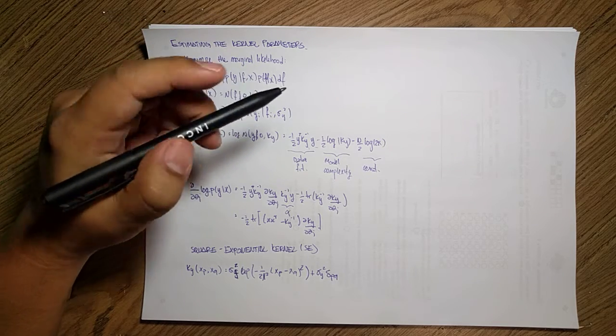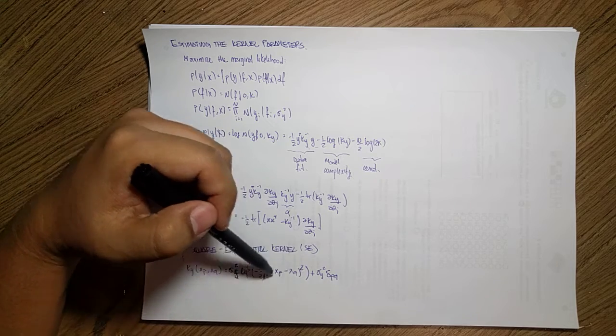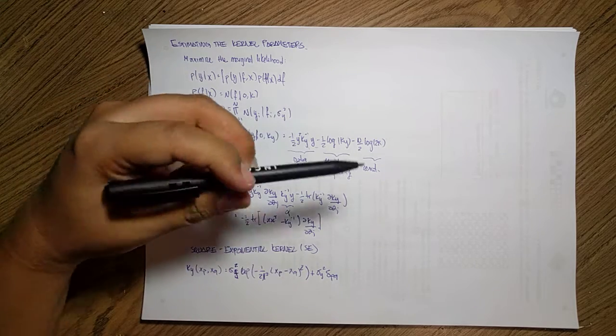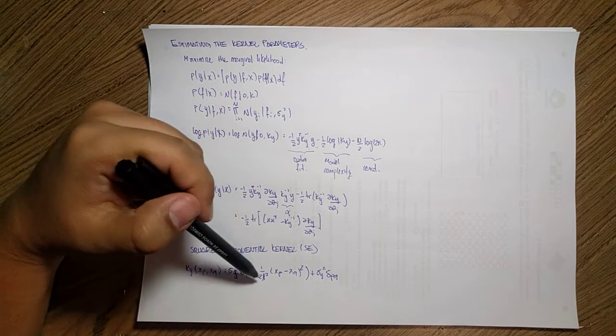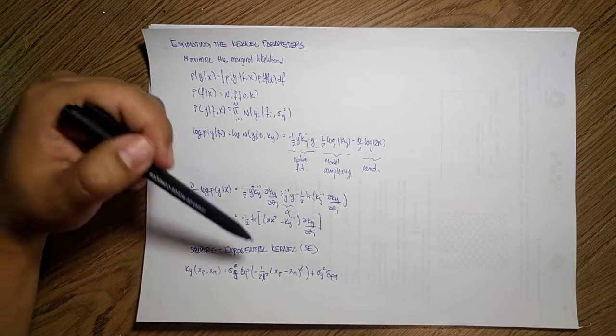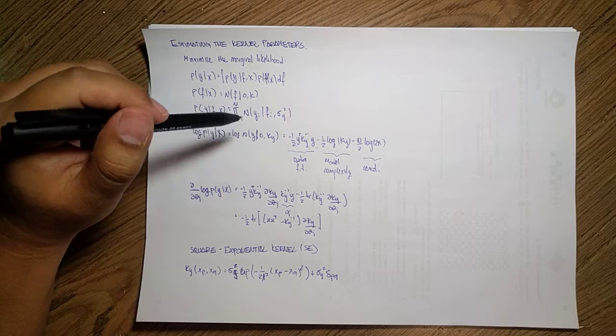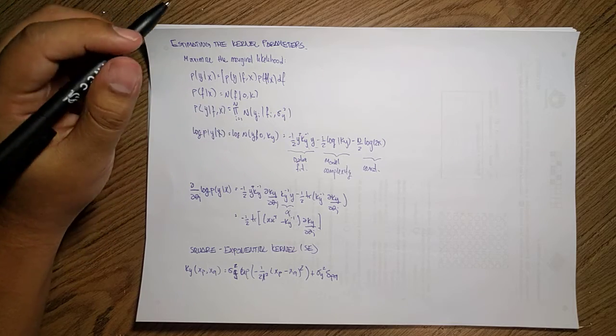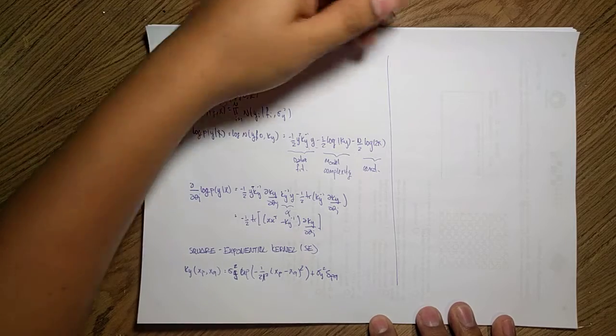This is called the squared exponential because I'm squaring this difference with respect to some exponential. If you see it's kind of a Gaussian, with l as the standard deviation and just centering within the other data point and seeing how far it is spreading out. So if we use this kernel, I can compute my derivatives.